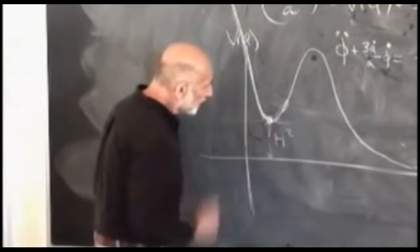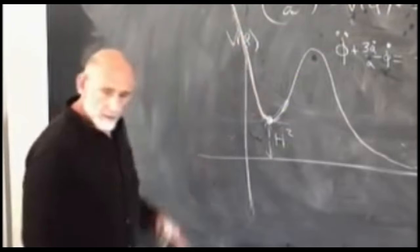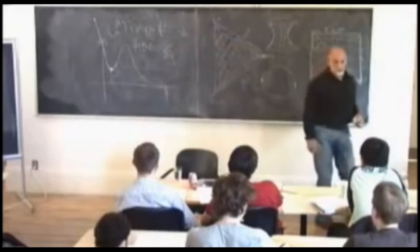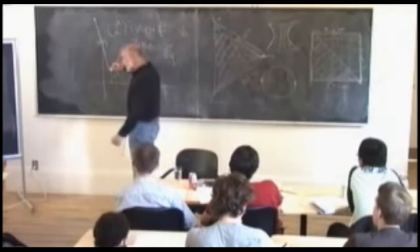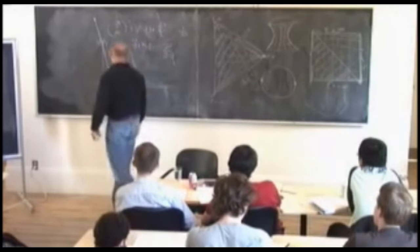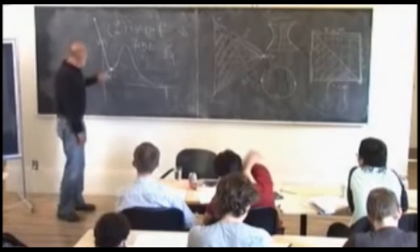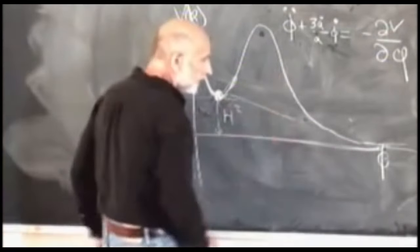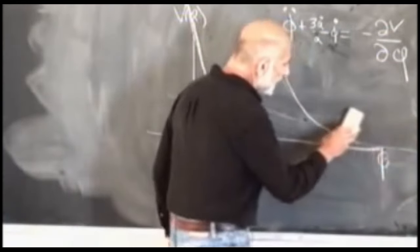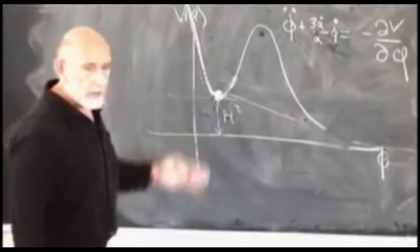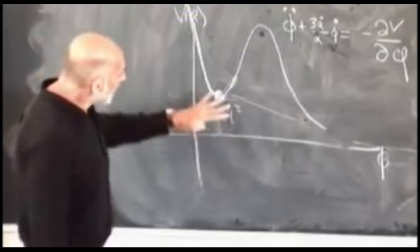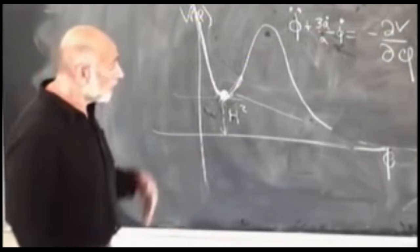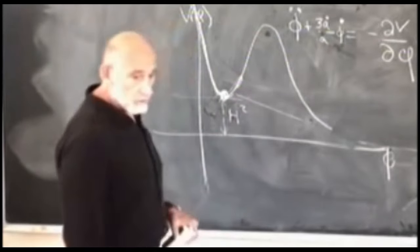So the physics if you're stuck at the bottom of this potential would be de Sitter space. But in quantum mechanics, something else can happen: tunneling. Tunneling out of this well can happen, and you can tunnel from here to here. Let's complete our model.